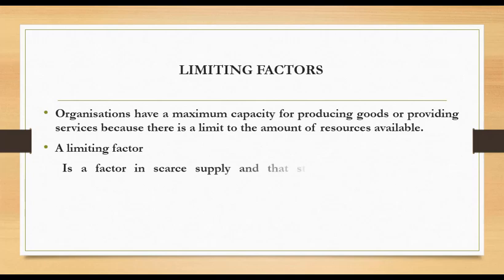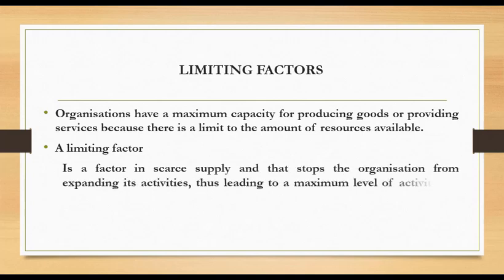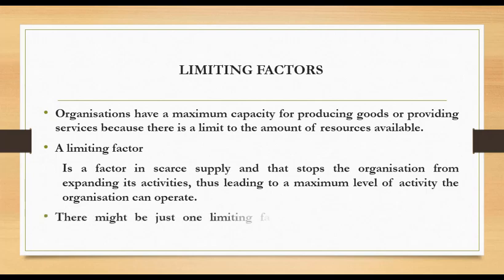Sales demand for product A is 10,000 units and product B is 2,000 units, all of which require a total of 8,000 kilograms of materials. But we found that an organization can only obtain 6,000 kilograms. This calls for a way for an organization to make optimal use of resources such that contribution is maximized. So that's a limiting factor.